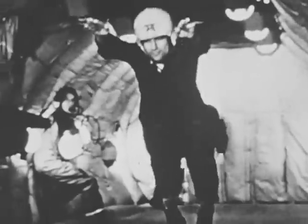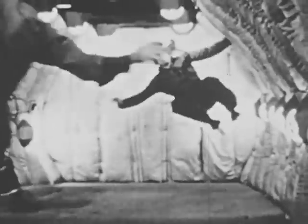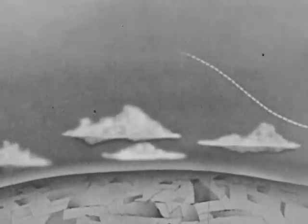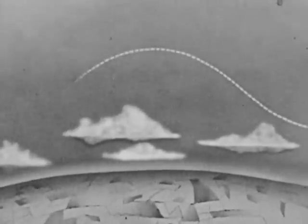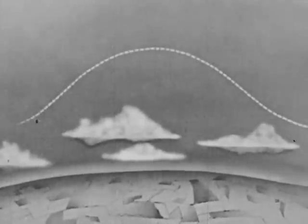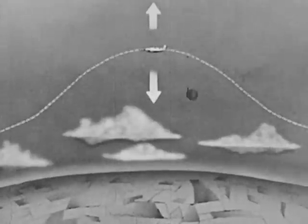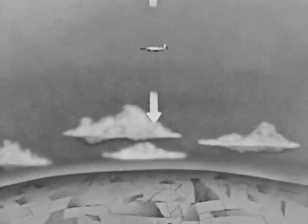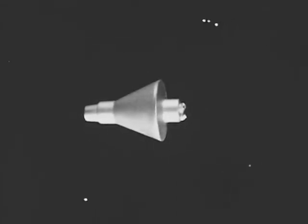Weightlessness — the opposite of multi-G's — is another problem, one not well understood. These floating men are in an airplane flying a curved path whose outward pull equals the inward pull of gravity, thus simulating a capsule in orbit.